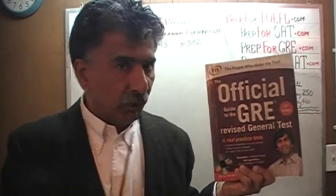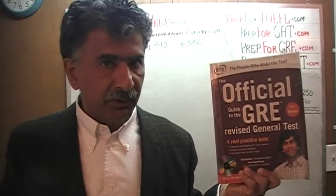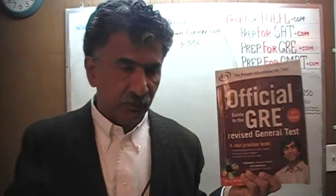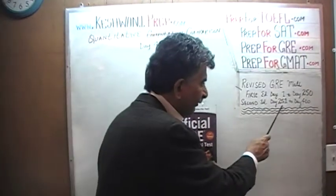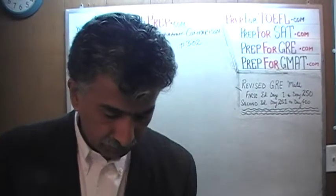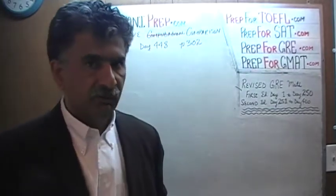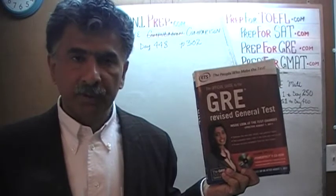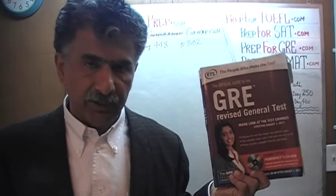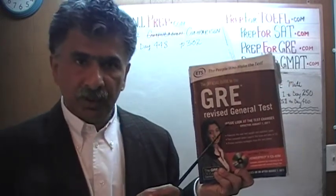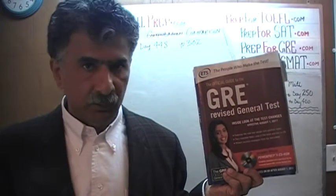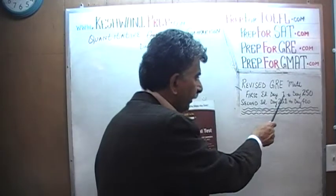We have finished doing almost all the problems from this book. If there is any math problem that gives you trouble that you wish to watch the solution of, you will find the solutions to almost all the math problems from this book from day number 251 through 400. This book happens to contain, in most cases, exactly the same problems appearing on exactly the same page numbers as the ones that appeared in the first edition of the revised GRE. We are done doing all the problems from this book. If you are interested in watching any of the original solutions to the problems, you will find the original solutions from day number 1 through 250.